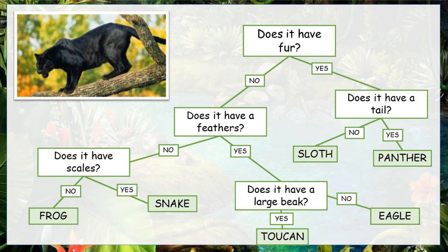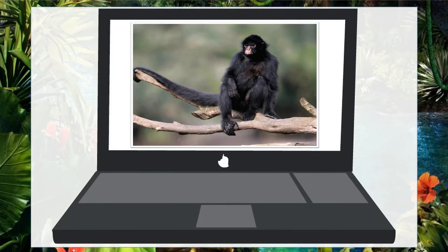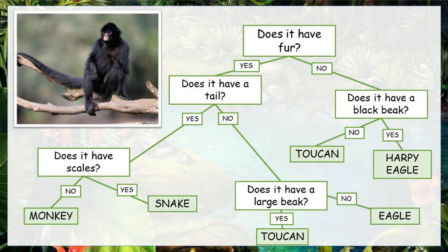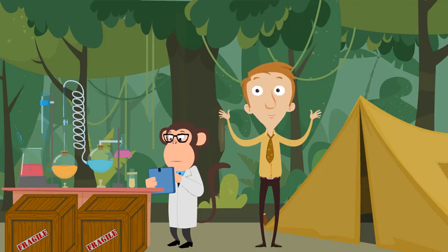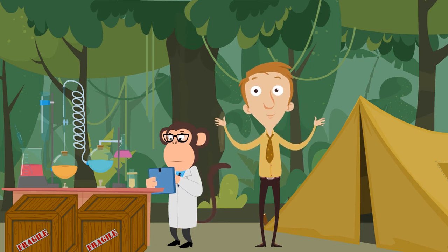Let's try one last one. I managed to catch a picture of this fella just as he was jumping through the trees. Can you use the professor's classification key to figure out what this animal is? Pause the video and give it a try. First question — does it have fur? Yes, we can see it. Does it have a tail? Yes. Does it have scales? No. So it is a monkey! Of course we already knew that. These are very simple classification keys, but they can get much more complicated. As long as you have the right key, you can find out what any animal is, even if you've never seen it before.